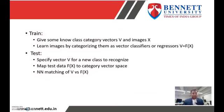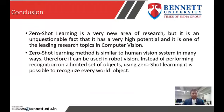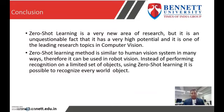Zero-shot learning is similar to the human visual system in many ways. Therefore, it can be used in robot vision. Instead of performing recognition on a limited set of objects, using zero-shot learning it is possible to recognize every real-world object. Zero-shot learning is a very new area for research, but it has very high potential and is one of the leading research topics in computer vision.